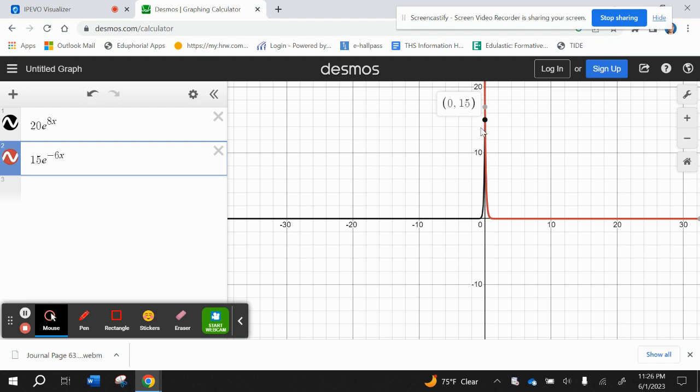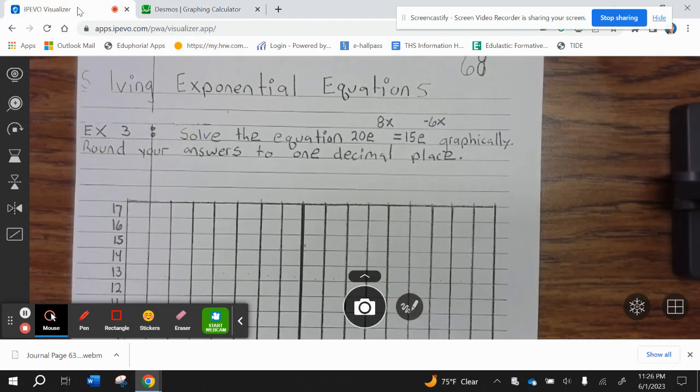Now be careful. That's the y-intercept. We don't want that. We want this point. So there is your point of intersection. That's negative 0.02, 16.9.